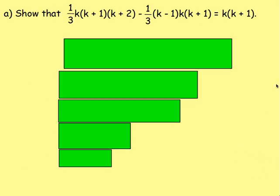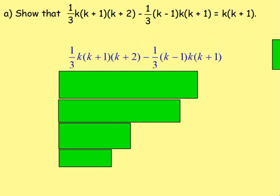So let's look at Part A. We want to show that the left hand side is equal to the right hand side. We start with the left hand side and show it equals the right hand side. We could factorize — if we look here, we could take out a factor of one third. We can take out one third as a common factor.